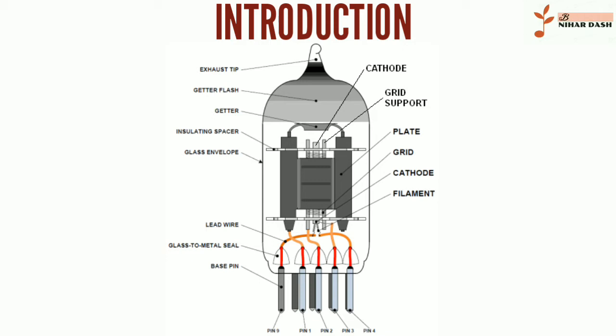Adding one or more control grids within the tube allows the current between the cathode and anode to be controlled by the voltage on the grids. These devices became a key component of electronic circuits for the first half of the 20th century.